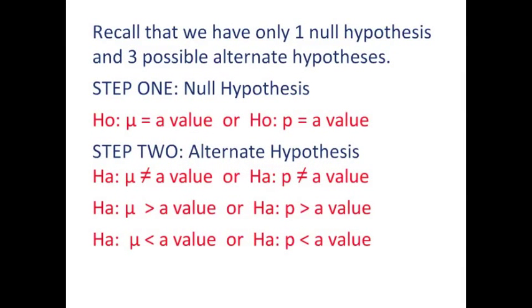We have only one null hypothesis and three possible alternative hypotheses. In other words, we're going to accept one null hypothesis based on the claim made by the problem, and then based upon the wording of the problem, we'll select from three possible alternate hypotheses.